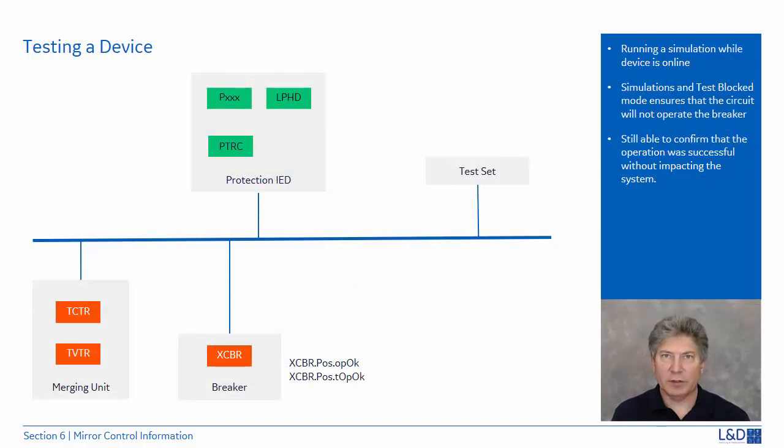Let's review how it's possible to test a device that is connected to the system. In our example, we want to test the performance of a main protection that receives sample values from a merging unit and trips the breaker through a breaker IED over a process bus.